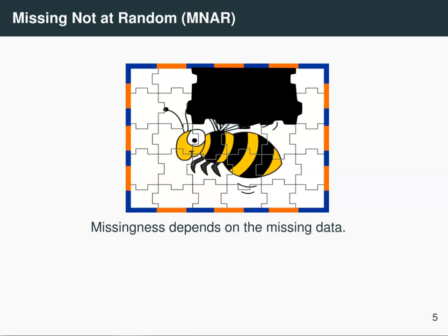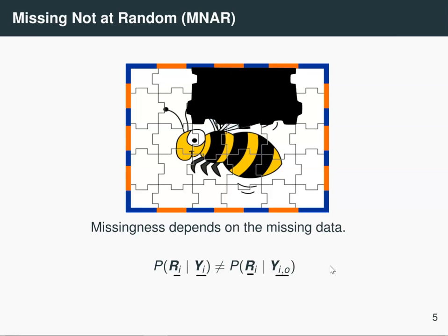On day three, Mr. Pickles took off the blue pieces because they have the wings and he wanted to pretend to be a bee. Here the missingness depends on the actual color of the pieces — it depends on the variable of interest. This is an example of a missing data mechanism where it is not at random: the missingness depends on the unobserved data. So the probability of ri given the observed data also depends on the missing data. Looking at the puzzle, you would have quite a different understanding of what colors are present because the blue ones are now removed and you don't really have a way of recovering them.